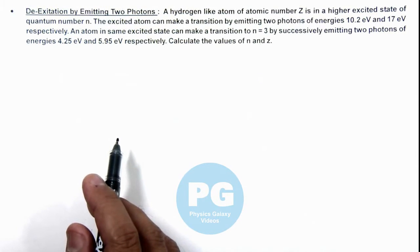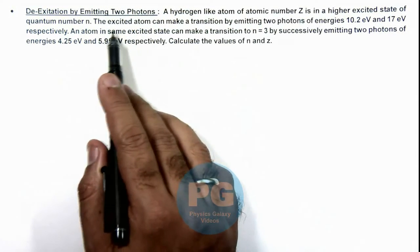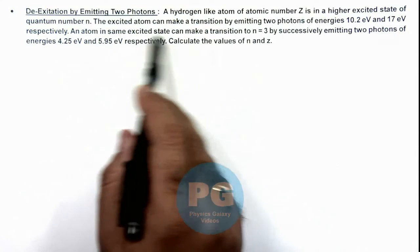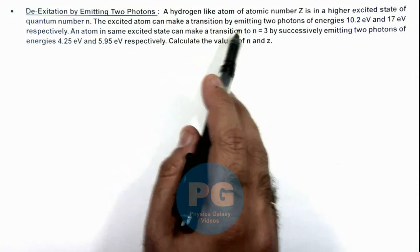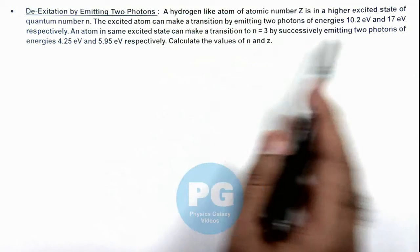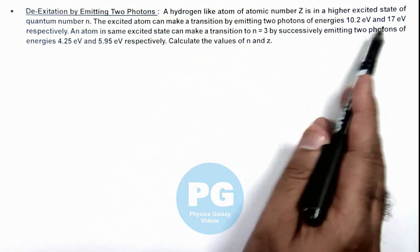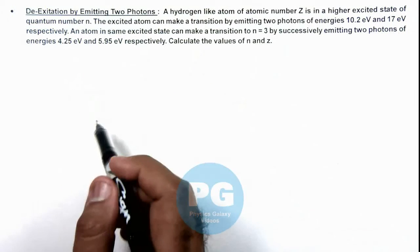Now in this situation, the first case we are assuming that atom is transiting to n equal to n1, in which the photon energy is 10.2 and 17 electron volts are emitted.